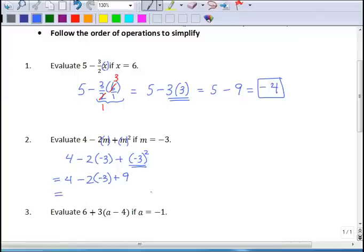After I do my exponents, I do multiplication and division. Here's some multiplication. I'm going to think of that as negative 2 times negative 3, which will give me a positive 6. So I have 4 plus 6 plus 9. And then all I have left is addition. I'm going to go left to right. 4 plus 6 is 10. Plus 9 is 19.